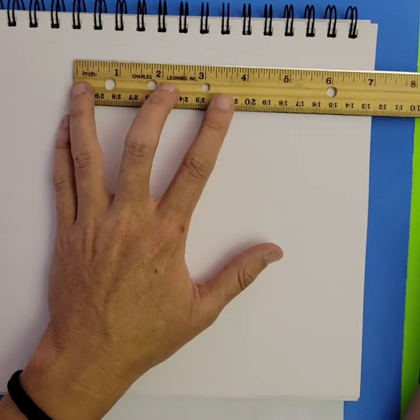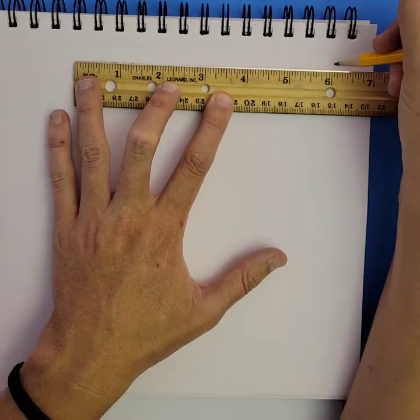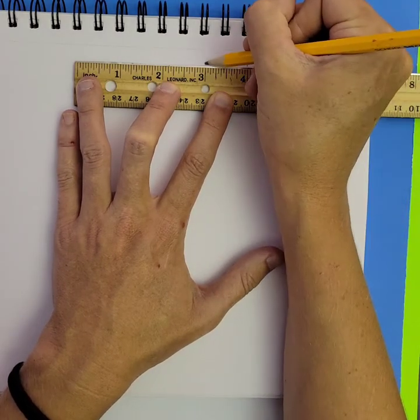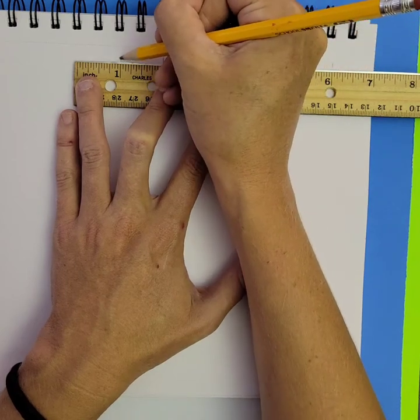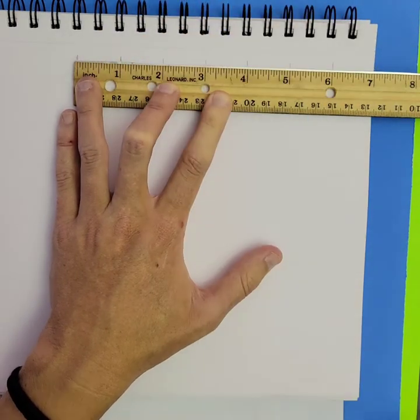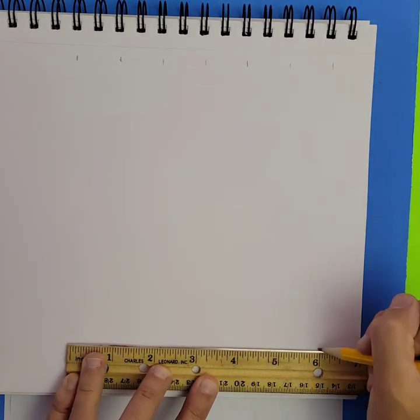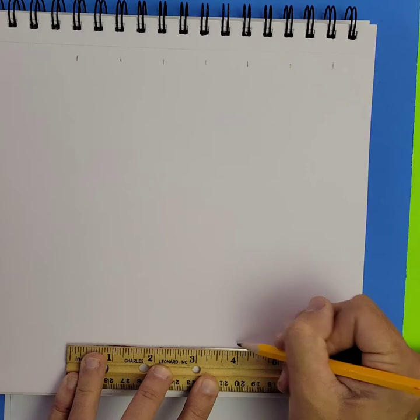As I go to do this on my drawing paper, it is really important at this point that you're using a pencil. You want these grid lines to be fairly light because this is just a trick that artists use to transfer the image. You don't want it necessarily to be part of your final drawing.